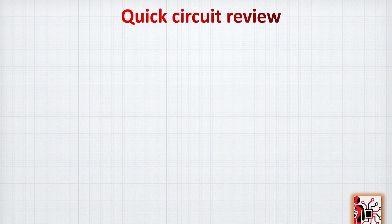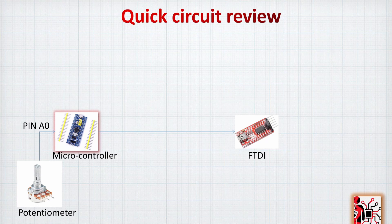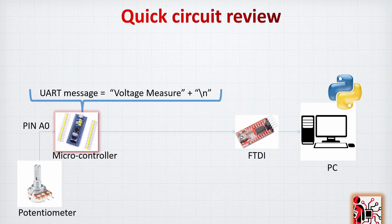Let's review the circuit. We will connect the potentiometer's middle pin to pin A0, which is Port A Pin 0, for the ADC. The microcontroller connects via the FTDI to the PC, where Python handles the serial communication. Since we're using the STM32F1, we need the FTDI, but if your microcontroller can already send data over UART, you don't need it. The UART message will be the measured value followed by a newline character.